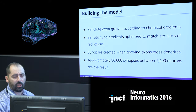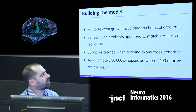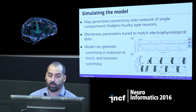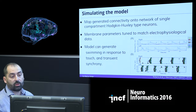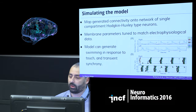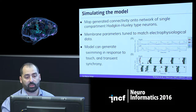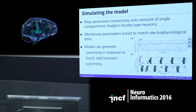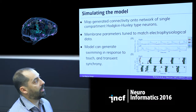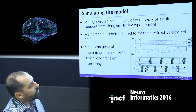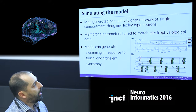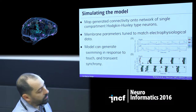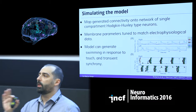In total there are about 80,000 synapses in the model and about 1,400 neurons. The functional model uses Hodgkin-Huxley type neurons to generate connectivity, and the membrane parameters were tuned to match electrophysiological data. On the graph, the swimming pattern is shown as an outcome: a yellow dot represents the initial touch which generates the swimming pattern, and the green dots show neurons being fired on both sides of the tadpole.